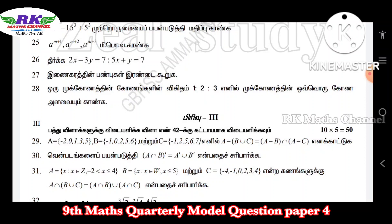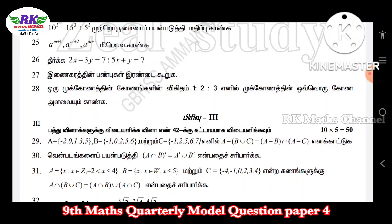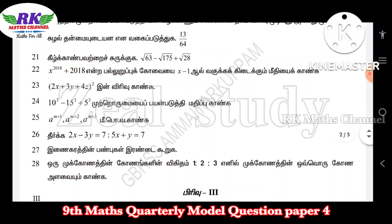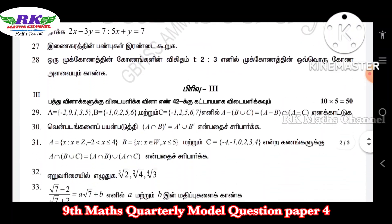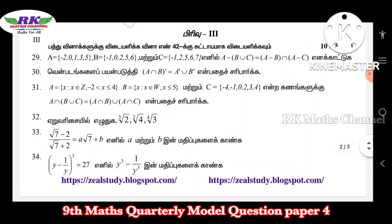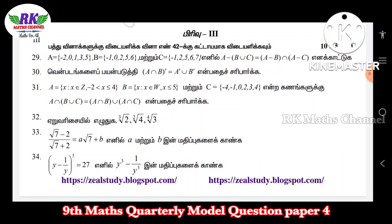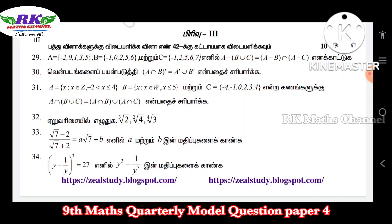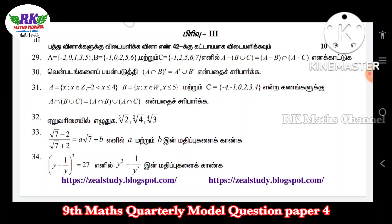Next, question number 28: three sides ratio — find the angles. So here are two marks — 10 questions. Okay, so next Part 3: 5-mark questions, total you have to write 10 questions, 10 fives are 15 marks. The first question: A set, B set, C set — A minus B union C equals A minus B intersection A minus C. LHS equals RHS. Next, we have to do the Venn diagram and the equation.